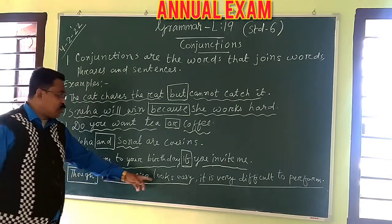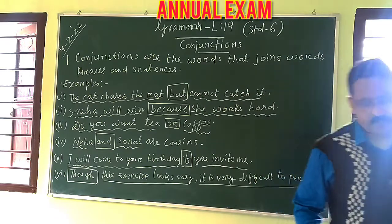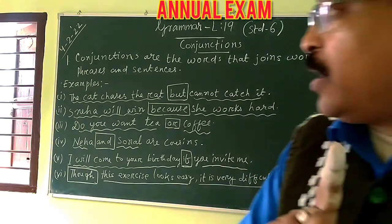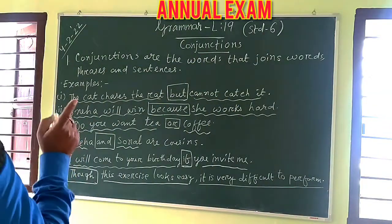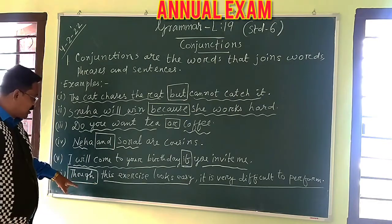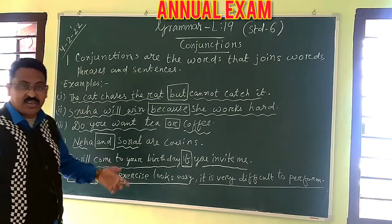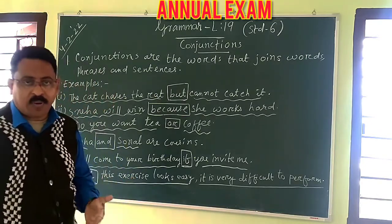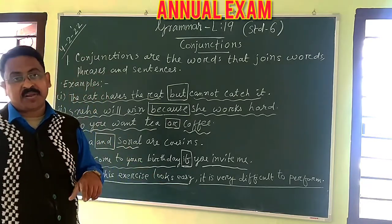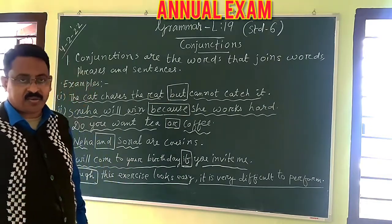Here is another example. 'This exercise looks easy' is one sentence, and 'it is very difficult to perform' is another sentence. These two sentences are joined with the conjunction 'though': 'Though this exercise looks easy, it is very difficult to perform.' In Hindi, 'though' is 'Jogiyoba.' Notice that the conjunction comes at the beginning of the sentence here.